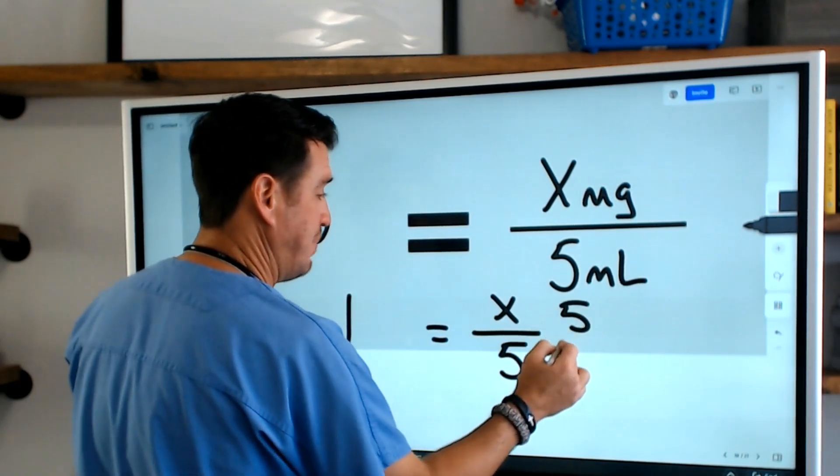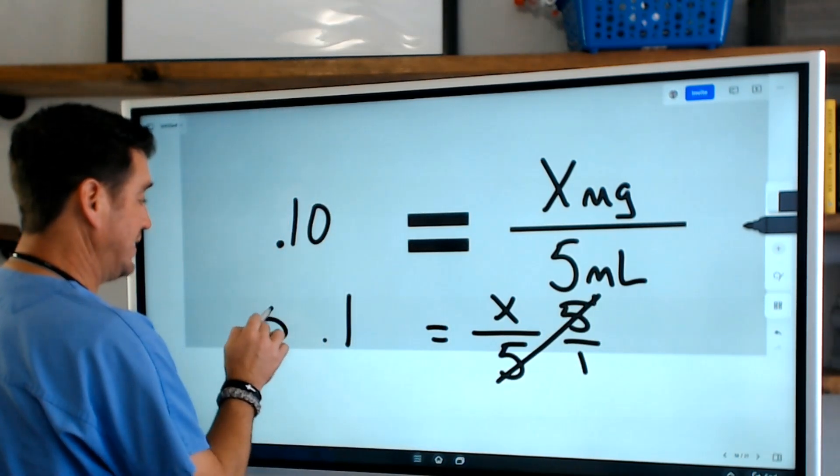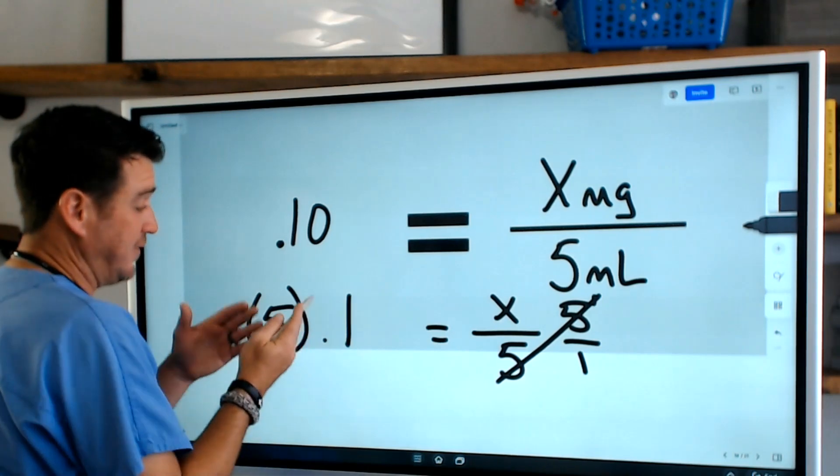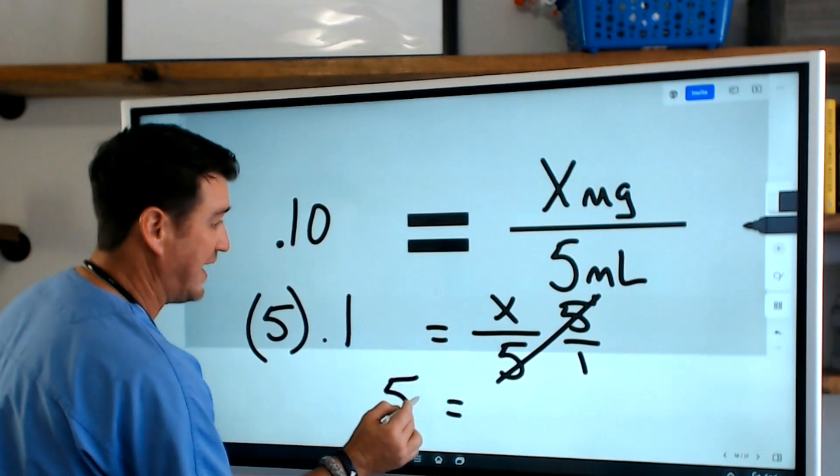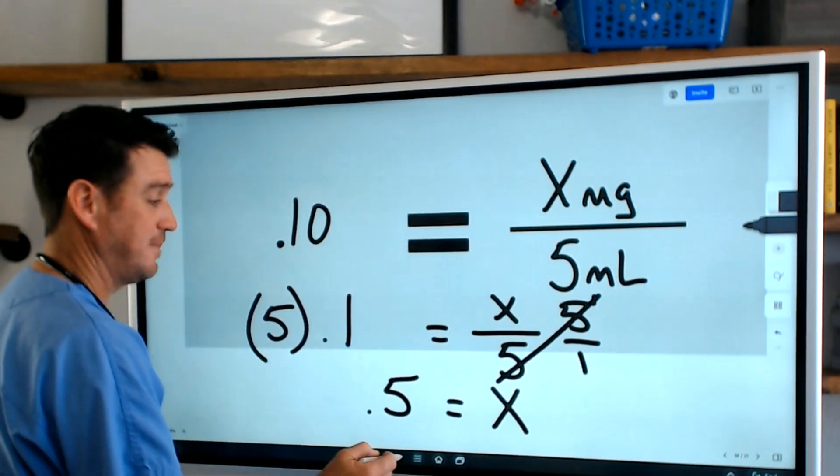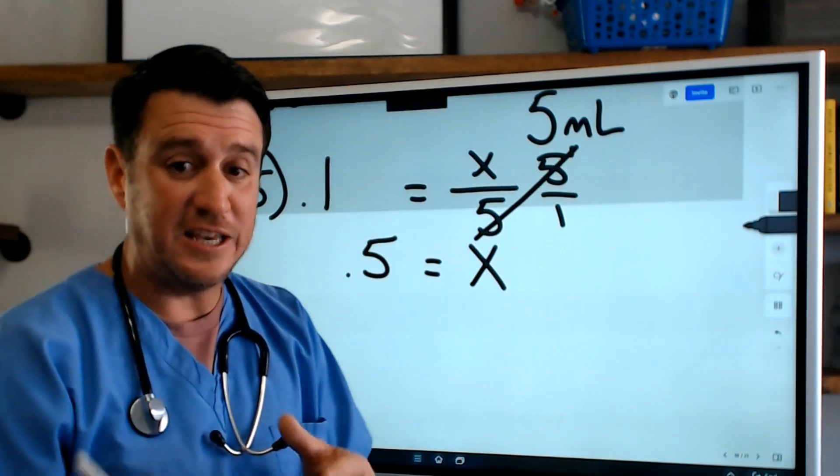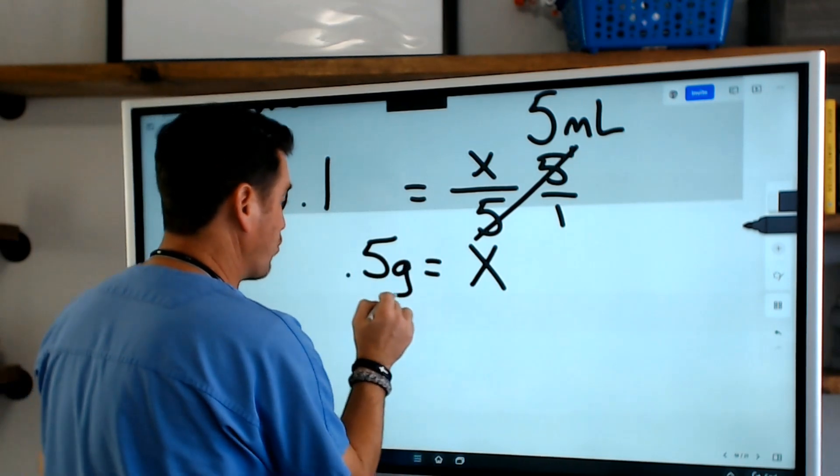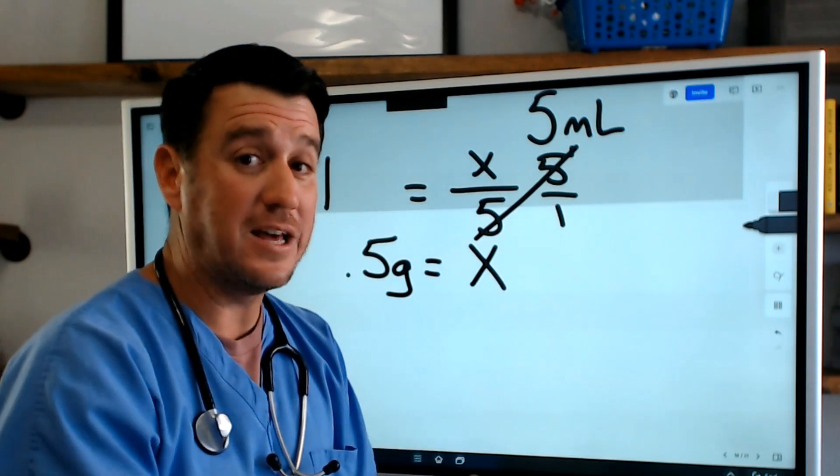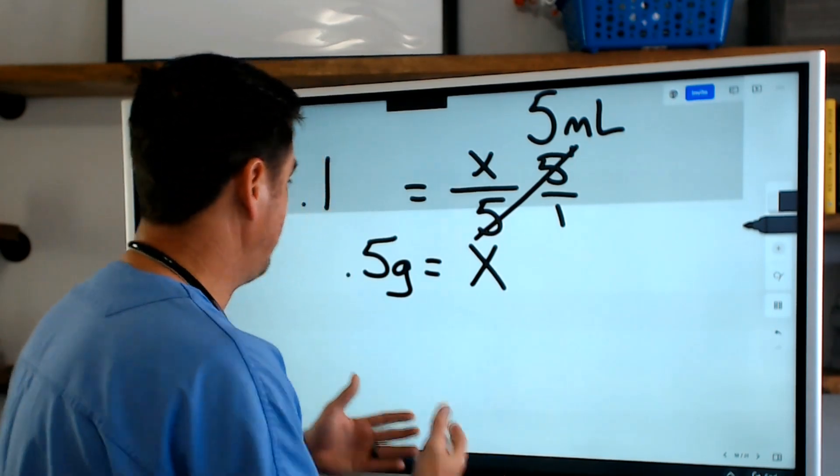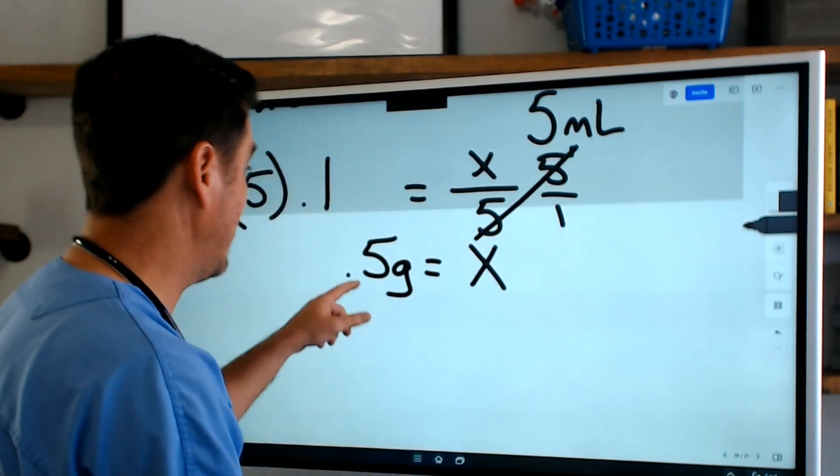We're going to multiply both sides by 5. That's going to cancel this out, and we're going to multiply the percent strength side by 5. This means that we have 0.5 equals x. Now remember that this formula gives you this number in grams. So to figure out how many milligrams we've given, we just have to turn grams into milligrams by multiplying times a thousand.